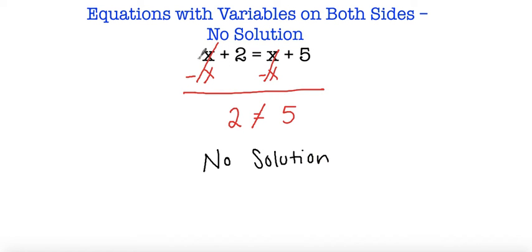There's no number that I could put here that would make these two equal to each other. So I have x plus 2 is equal to x plus 5. If I substitute 1: 1 plus 2 is 3, and 1 plus 5 is 6, and that would still not be equivalent.